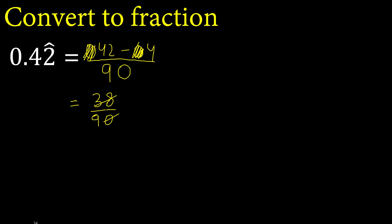Can be simplified because it can be divided by the same number. Divided by 2 is 19, divided by 2 is 45.